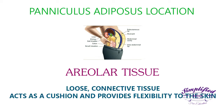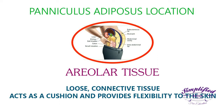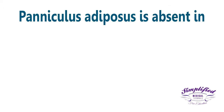The fat layer is present in the areolar tissue, which is a loose connective tissue that acts as a cushion and provides flexibility to the skin of the superficial fascia. It is also present in various organs, glands, and neurovascular bundles of the body.